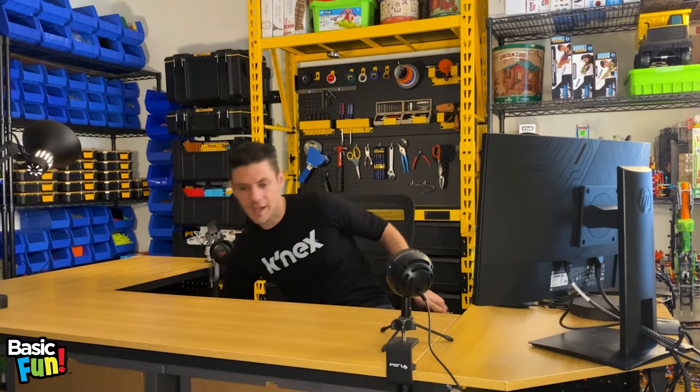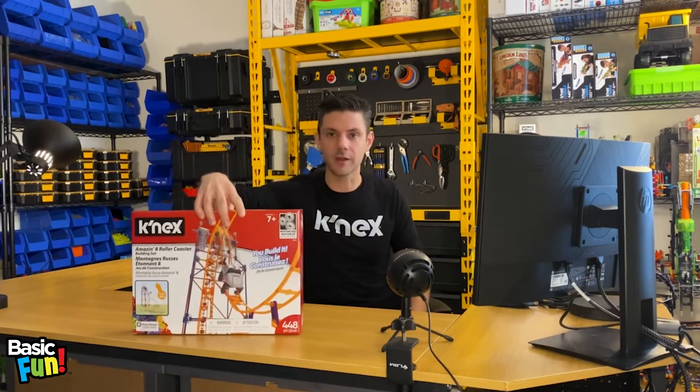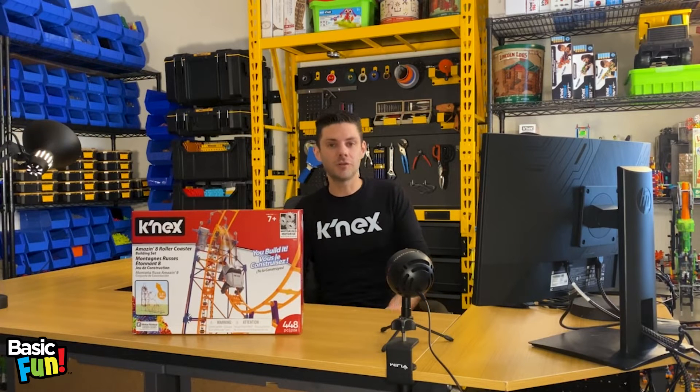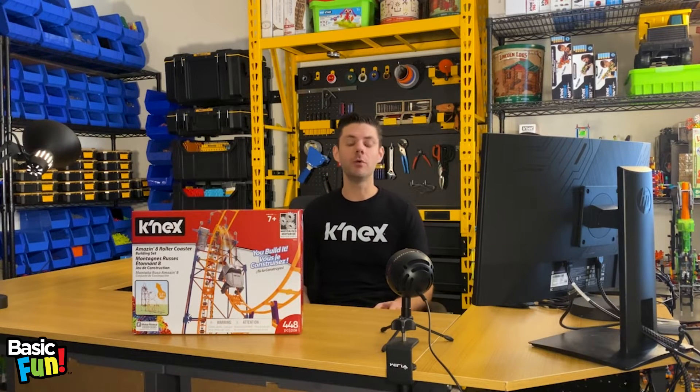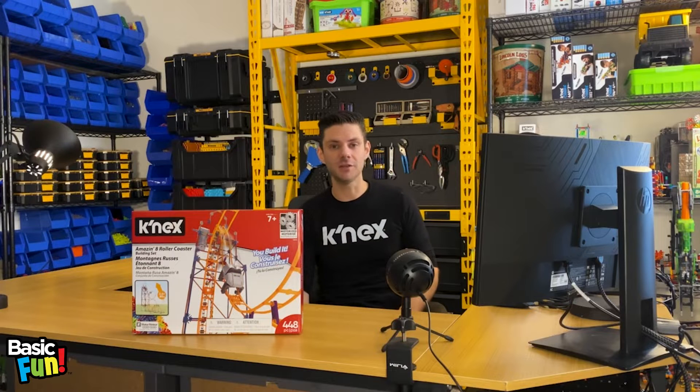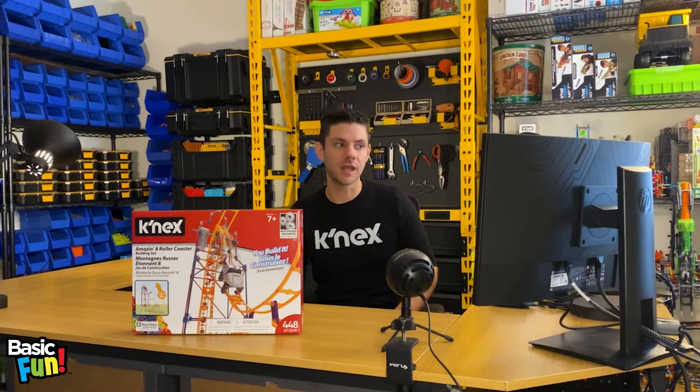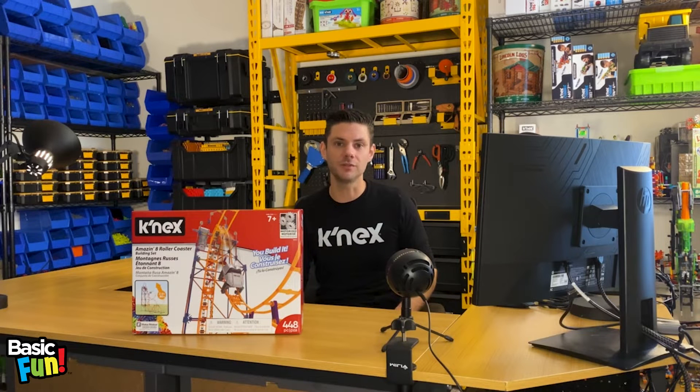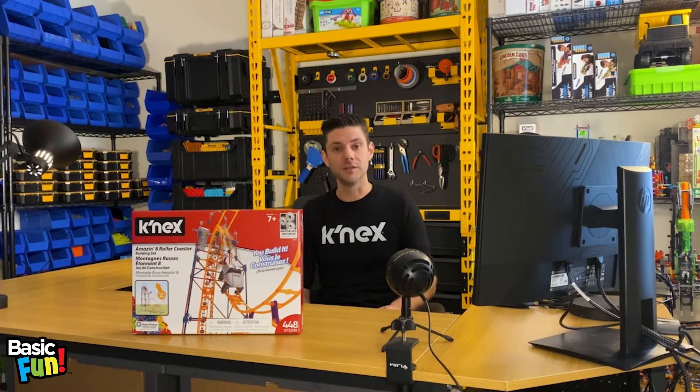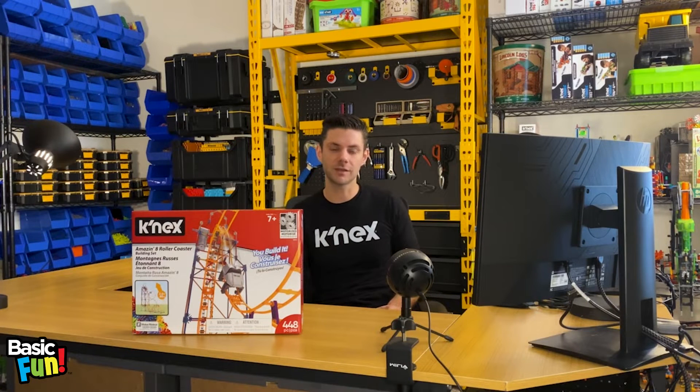So for today's example, I'm going to use this set right here. This is our 80216 Amazing 8 roller coaster available on both Amazon and Amazon UK. This set includes 448 pieces and stands just over two and a half feet tall once complete. This is graded ages seven plus, has a motor, and is made mostly of micro kinetics.